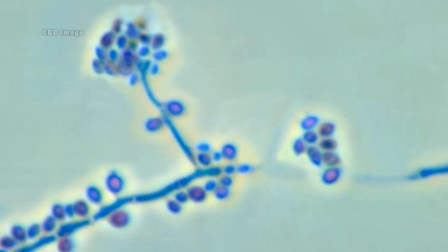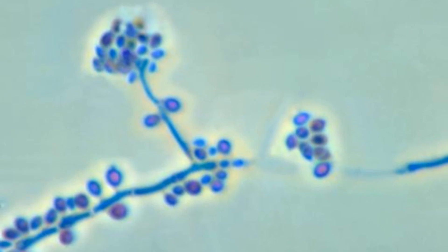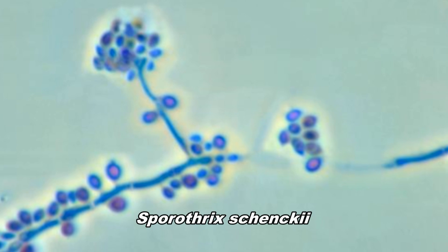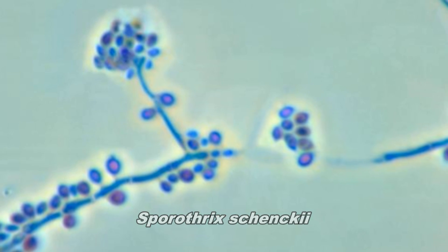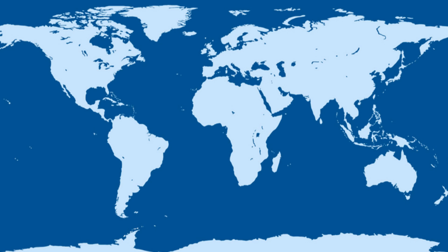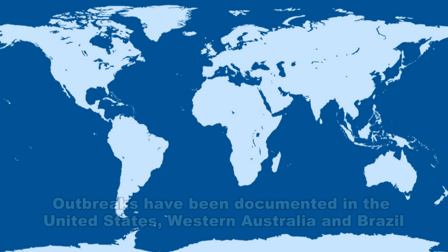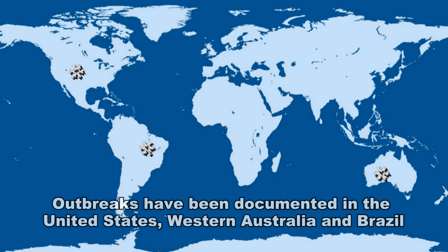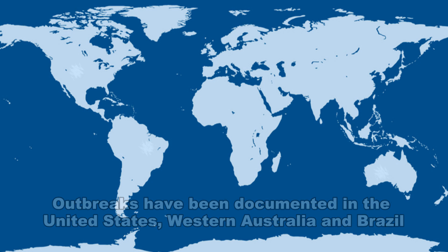Sporotrichosis is an infection caused by a fungus known as Sporothrix schenckii. Outbreaks of Sporotrichosis have been documented in the United States, Western Australia, and Brazil.